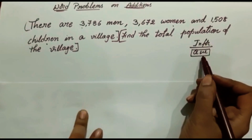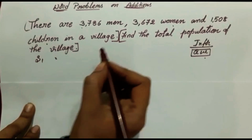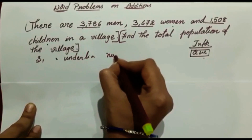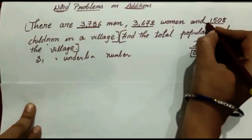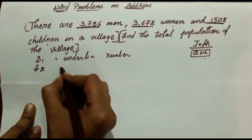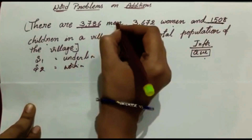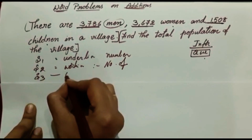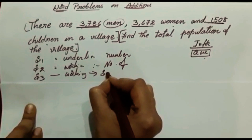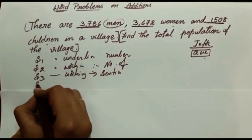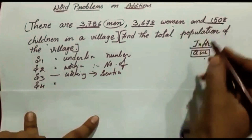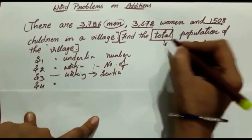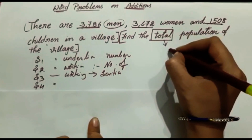After getting the information and question, we follow steps. Step 1: underline the numbers — men, women, and children. Step 2: write the word for the working — all countables are written as 'number of'. Step 3: write the sentence of the working. Step 4: find the keyword. The keyword here is 'total'. Every time we find the keyword to know what operation to use. Total means addition.